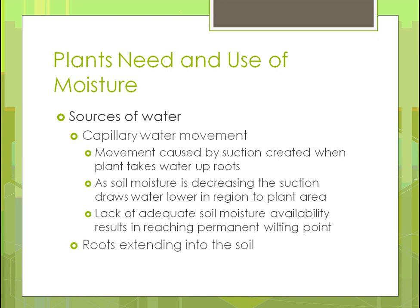For capillary water management, water movement is caused by the suction created when a plant draws water up through its roots. As soil moisture decreases, suction draws water toward the lower region of the plant's root zone. If there isn't enough soil moisture available, the plant reaches the permanent wilting point. When water is insufficient, roots try to extend deeper and deeper into the soil to find moisture. Sometimes they find it; sometimes the effort costs so much energy that the plant dies before it can recover.